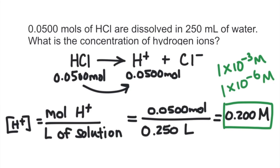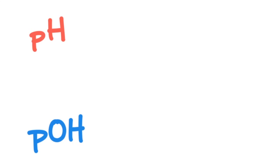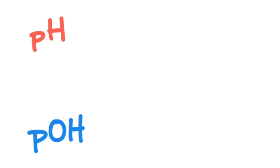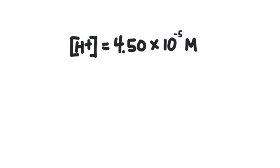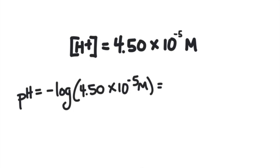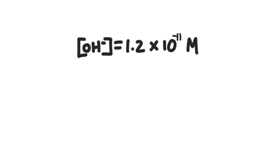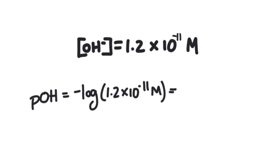Because concentrations are so small, scientists came up with a better way to express the concentration of an acid or base. For acids it's called pH, and for bases it's called pOH. These are logarithmic scales that take tiny amounts and turn them into large whole numbers. To calculate pH, we use: pH = −log[H⁺]. To calculate pOH: pOH = −log[OH⁻]. For example, if [H⁺] = 4.5 × 10⁻⁵ M, the pH would be 4.35. And if [OH⁻] = 1.2 × 10⁻¹¹ M, the pOH would be 10.9.